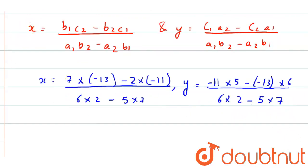If we solve it further, we will get x as minus 91 plus 22 divided by 12 minus 35, and y as minus 55 plus 78 divided by 12 minus 35.